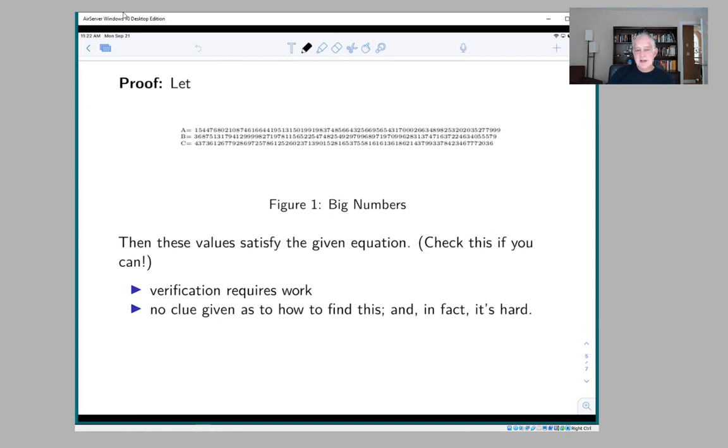These three numbers satisfy that equation and they're the smallest ones that work. Finding them requires you to know something about the theory. You can't just find these numbers by messing around. There can be hidden depths in these simple equations and existence problems.